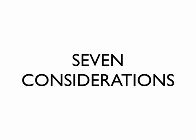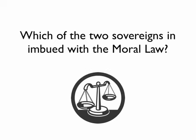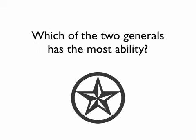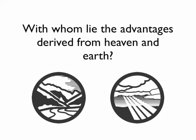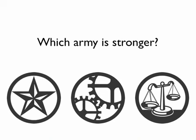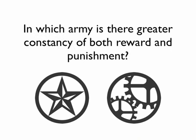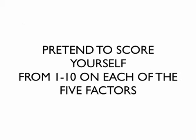To determine who has the advantage, Sun Tzu lists seven considerations to compare yourself and your opponent: which sovereign is imbued with the moral law; which general has the most ability; with whom lie the advantages derived from heaven and earth; on which side is discipline more rigorously enforced; which army is stronger; on which side are officers and men more highly trained; and in which army is there greater constancy of reward and punishment.